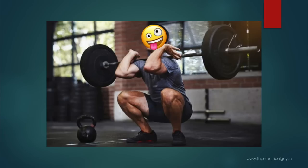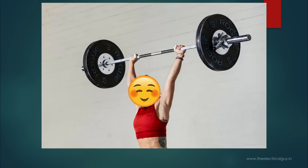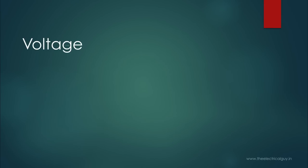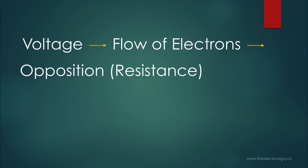We can also relate this with weightlifters — they have to lift the weight against the pull of gravity. If the weight is very heavy or if they have to lift it very high, the amount of work done also has to be very high, and this work done is called as power. In a similar way, when we apply voltage to a circuit, electrons will start flowing against the opposition offered by resistance, and some work is being done to move electrons.